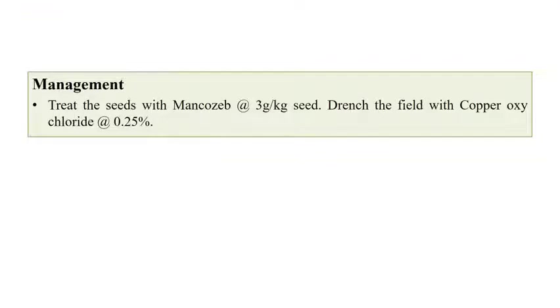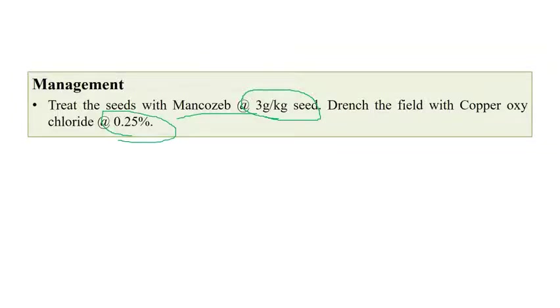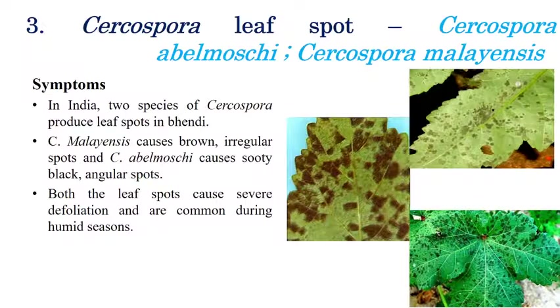For management of Fusarium wilt, treat the seeds with mancozeb at the rate of three grams per kilogram of seeds, and drenching with copper oxychloride at the rate of 0.25 percent is recommended.